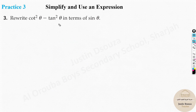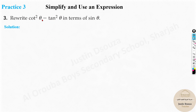Final expression: simplify cot²θ − tan²θ in terms of sin θ. Substitute cot²θ = cos²θ/sin²θ and tan²θ = sin²θ/cos²θ. To combine these fractions, find a common denominator of sin²θ · cos²θ, giving (cos⁴θ − sin⁴θ) / (sin²θ · cos²θ). This requires further substitution since the answer must be entirely in terms of sin θ.